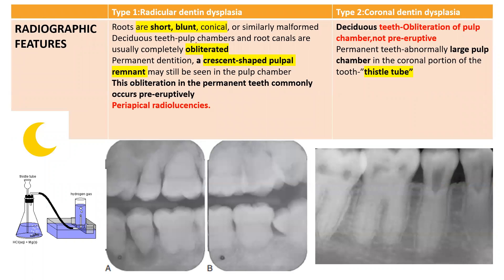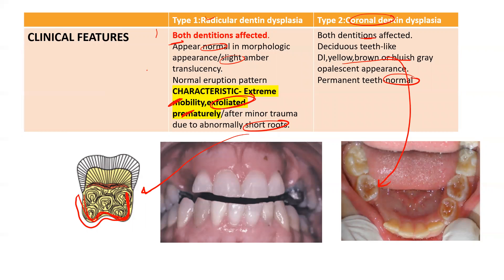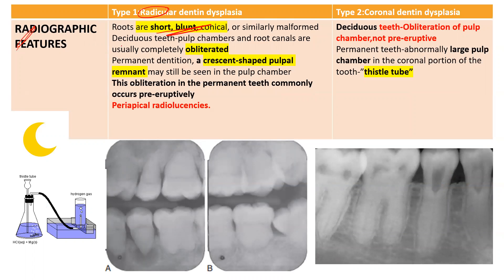The radiographic features are very important. In radicular dentin dysplasia, the roots are short, blunt, and conical. In deciduous teeth, the pulp chamber is completely obliterated, whereas in permanent teeth, there is a crescent-shaped pulpal remnant — thicker in the center and thinner towards the periphery, like a moon. This obliteration occurs pre-eruptively. You also see periapical radiolucency surrounding the apex of the tooth.